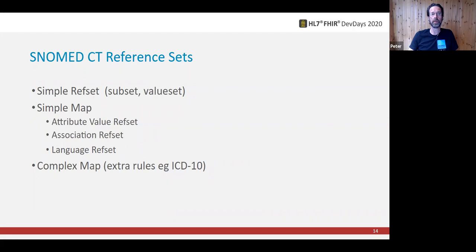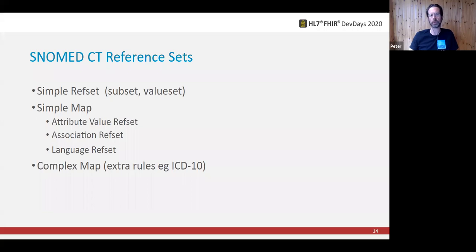Reference sets. There are three major types of reference set, although there are 21 different sorts in total, which you can read about in the SNOMED technical implementation guide on our website. A simple reference set is the same idea as a subset or value set. Simple maps get used for all sorts of things — most importantly, language reference sets and our historic replacement mechanisms. And when a simple map won't cut it, there are complex maps — for example, if we're mapping to ICD-10 when there are extra considerations at runtime, like it might make a difference to the mapping if a patient is male or female. Reference sets are also used to describe SNOMED CT structure itself.